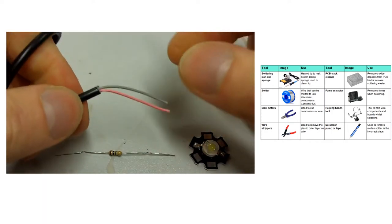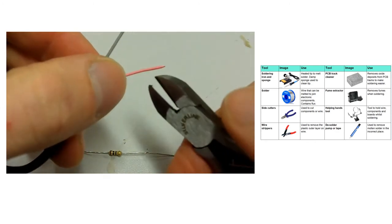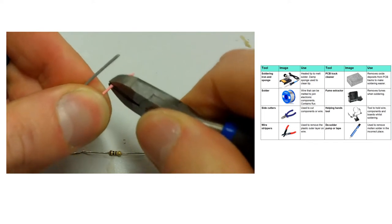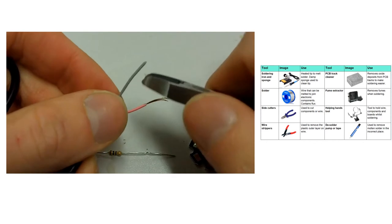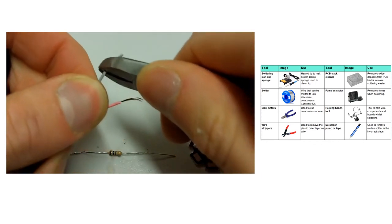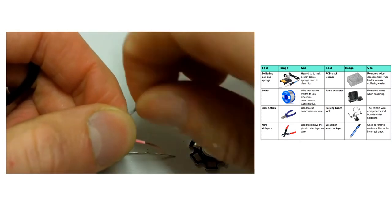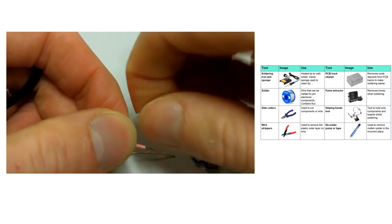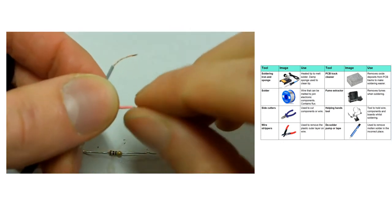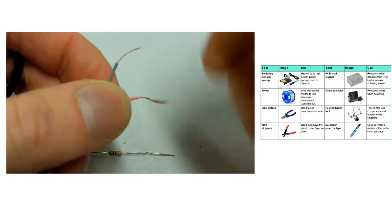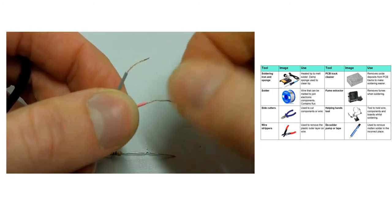Now strip about a centimetre off each wire by just pinching and pulling it away. If you cut all the way through, you've got enough to have another go. Next, give the wires a really good twist to get rid of the individual strands and create one strong piece of wire. Do the same on the red one and keep twisting until you get a nice strong piece.